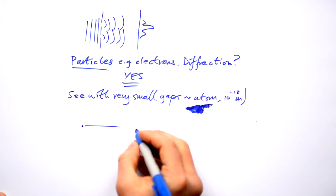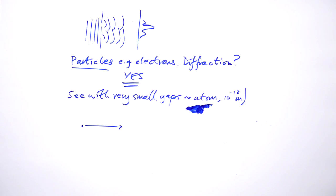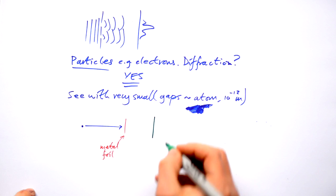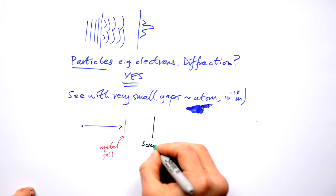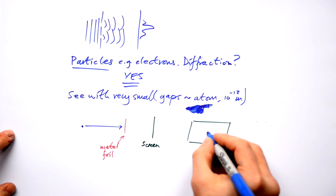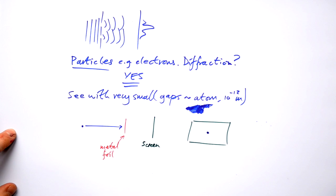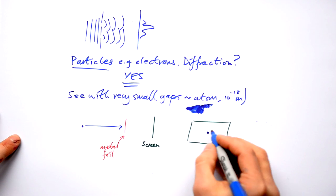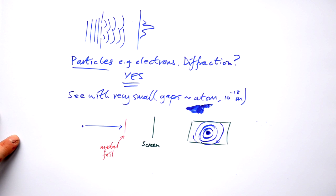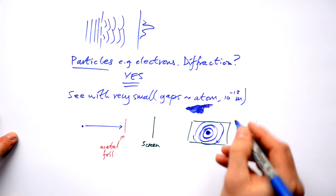So we fire electrons at a metal foil and then we have a screen over here. Now then if our screen looked like this and we were looking end on here what would we expect to see? We'd expect to see just a dot like that if no diffraction happened at all. But what we actually see is this. We see concentric circles. We have a circular diffraction pattern.